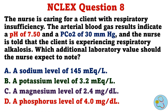Question 8. The nurse is caring for a client with respiratory insufficiency. The arterial blood gas results indicate a pH of 7.50 and a PCO2 of 30mm of mercury, and the nurse is told that the client is experiencing respiratory alkalosis. Which additional laboratory value should the nurse expect to note? A. A sodium level of 145 mEq per litre. B. A potassium level of 3.2 mEq per litre. C. A magnesium level of 2.4 mg per deciliter. D. A phosphorus level of 4.0 mg per deciliter.